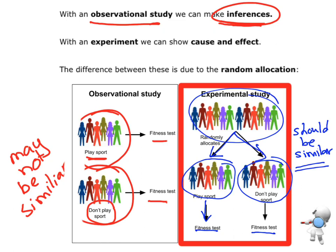So I'm going to control everything else. But the only thing that is different is the fact that one group played sport and the other group didn't. So in an experiment, we can show cause and effect.